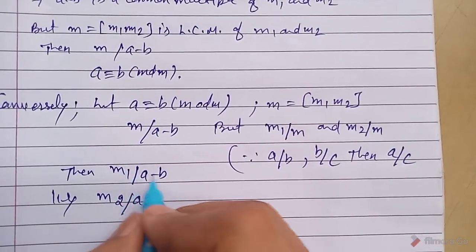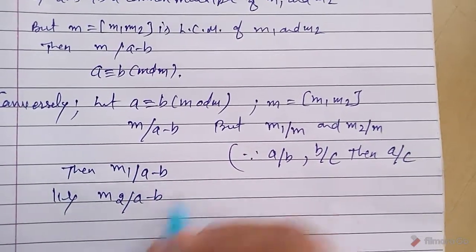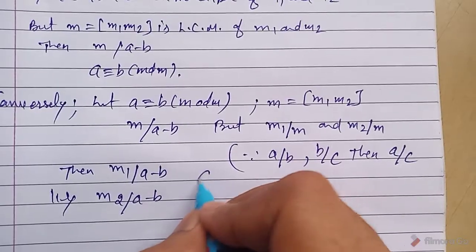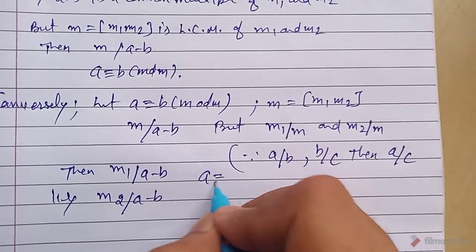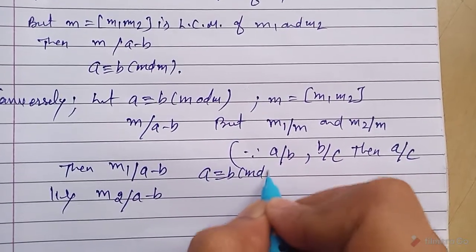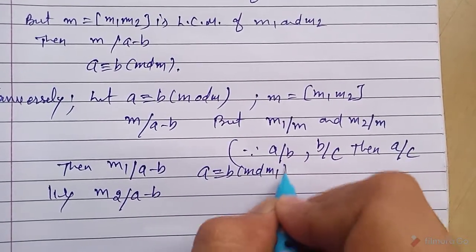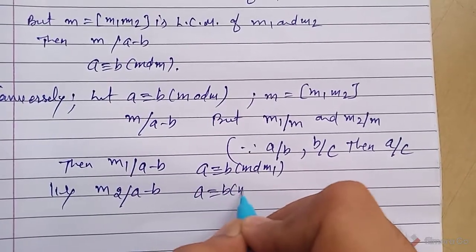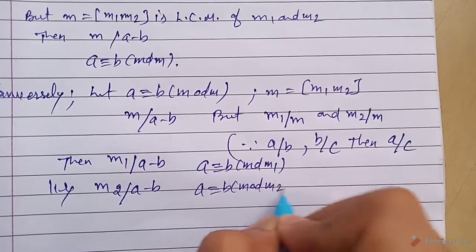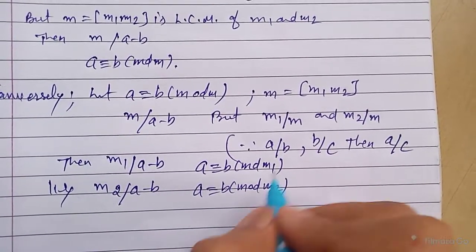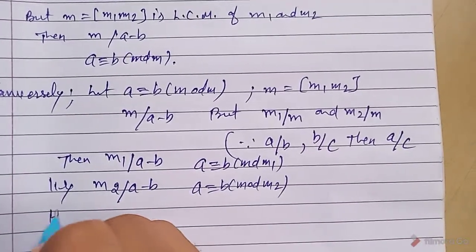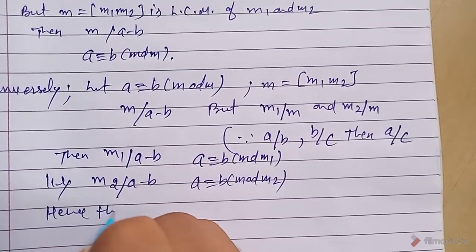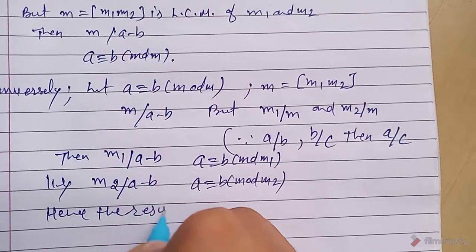Similarly, m2 divides (a − b). So from the definition of congruence, we can write a ≡ b (mod m1) and a ≡ b (mod m2). Hence the result is proved.